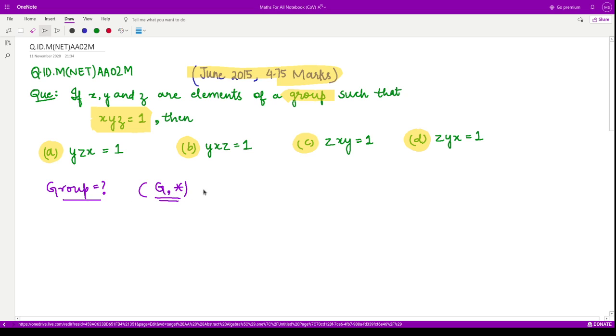This structure forms a group whenever we have the property of associativity. That means if you take any two elements a, b, c from the group, then a star b star c should be equal to a star b star c.